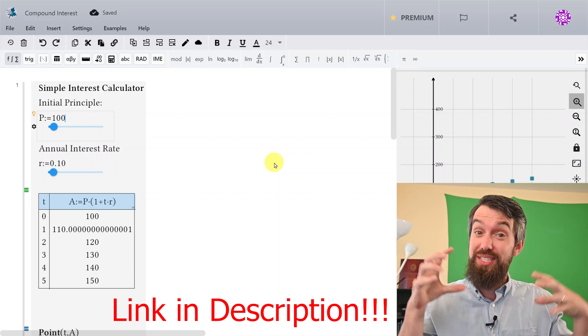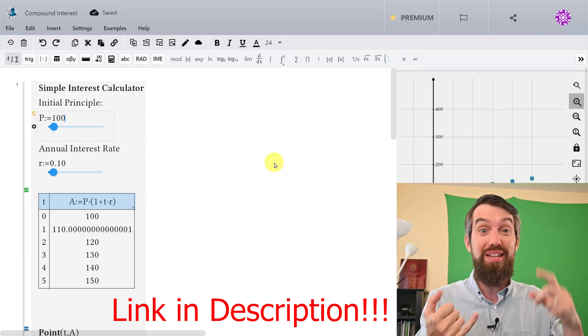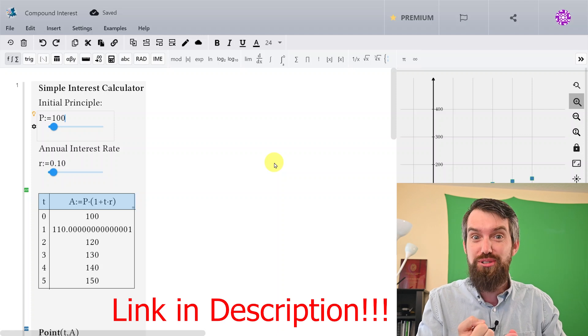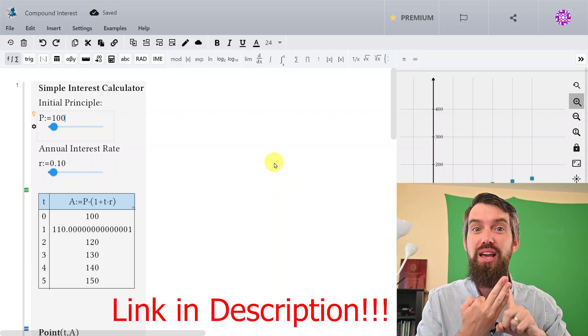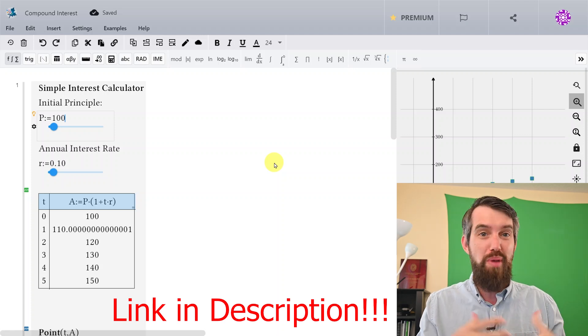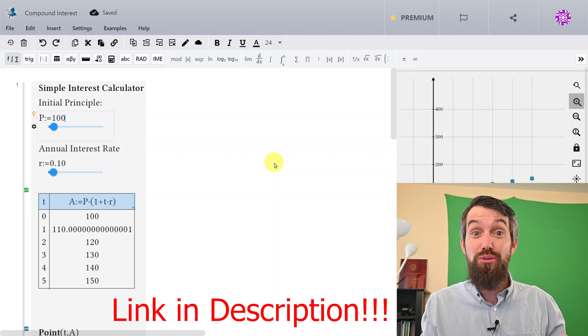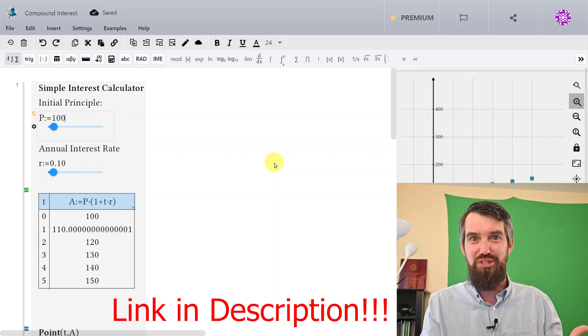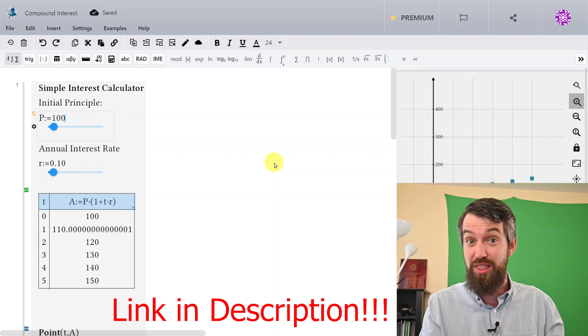So down in the description, you can check out this exact workbook where I have my simple interest calculator, my compound interest calculator, and my continuously compounded interest calculator. MapleLearn is a web app that allows you to make these interactive math workbooks where it does all of the computations for you. They're really cool, so check them out.